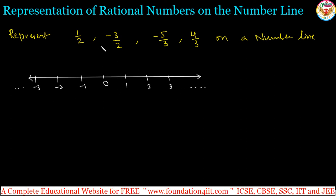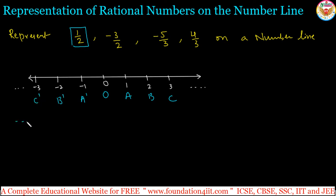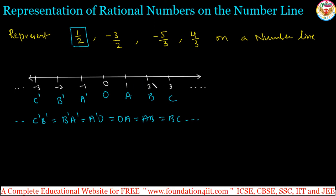To represent fractions or rational numbers on the number line, based on the denominator we can take the step. The distance between every integer point is equal. To represent fractions, according to the denominator, we have to divide each unit interval into that many equal parts. For the first problem, the denominator is 2, so between every two consecutive integers we make two equal parts.